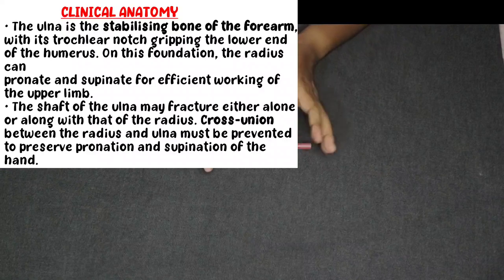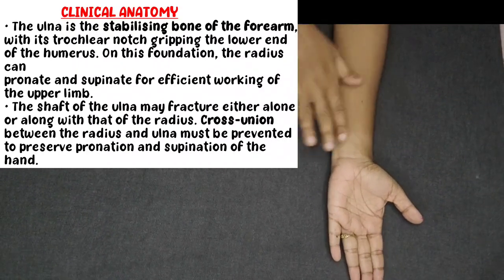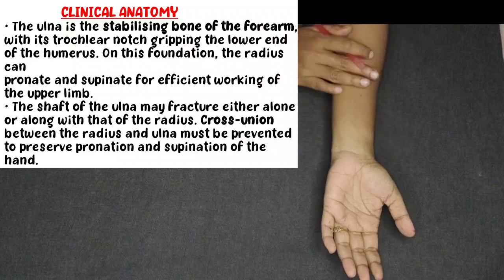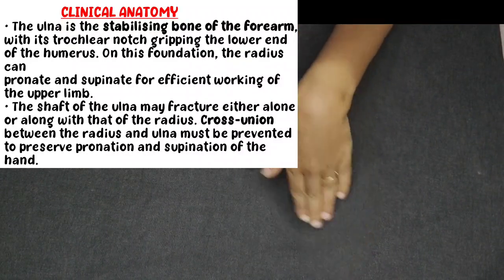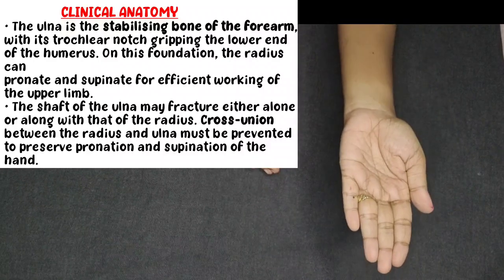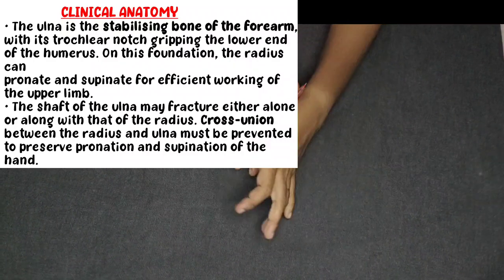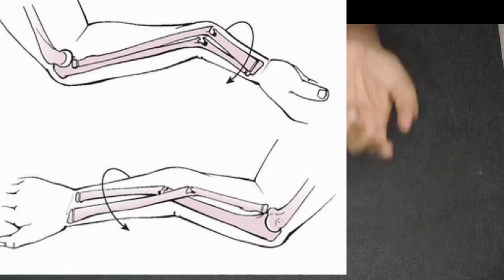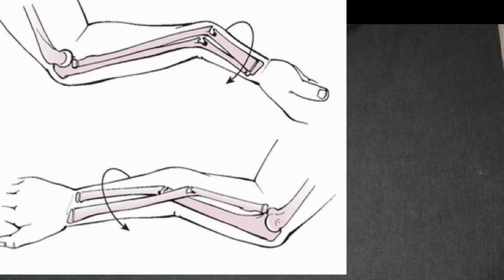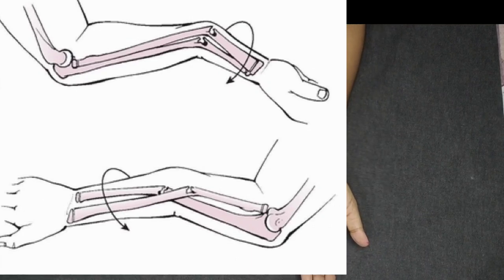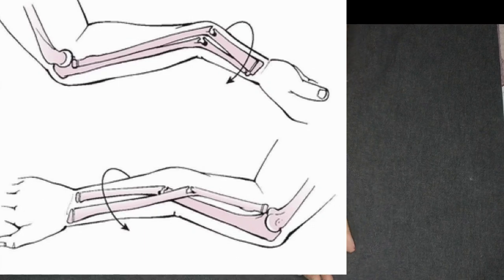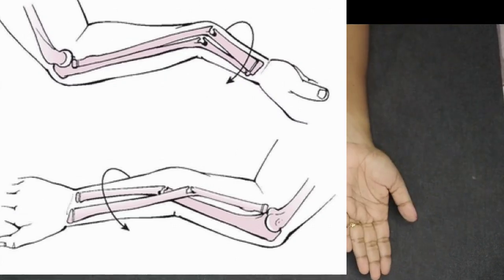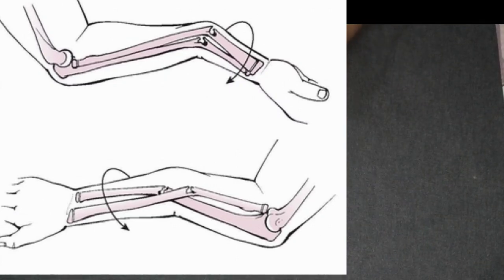Coming to clinical anatomy. The ulna stabilizes the forearm and helps with pronation and supination. First clinical point: the two bones — ulna and radius — can both be fractured, or the radius bone may be fractured alone. The two can fracture together.